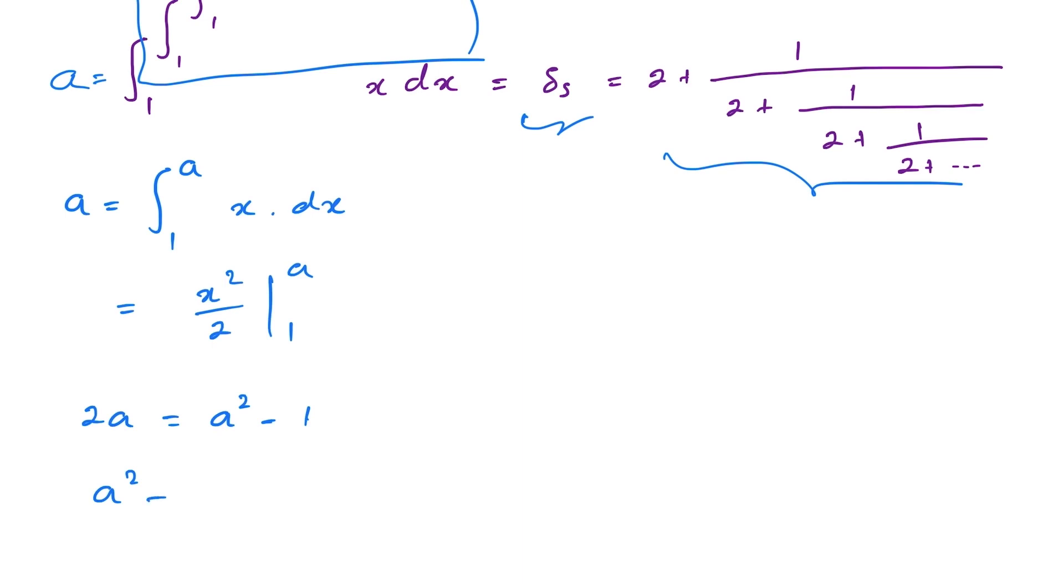We have a squared minus 2a minus 1 equals zero. We can simplify and write as a perfect square: (a - 1)² + 1 - 1 - 2 = 0.